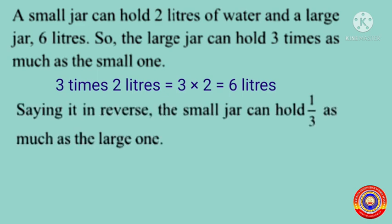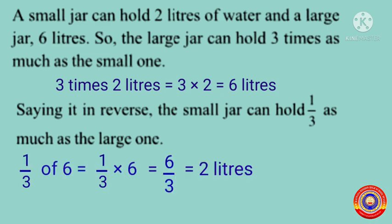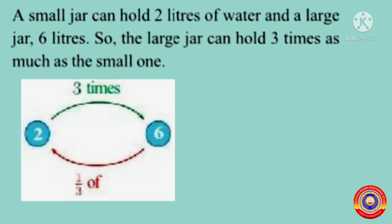Saying it in reverse, the small jar can hold one-third as much as the large one. That is, one-third of six is equal to one-third multiplied by six, that is equal to six by three, that is equal to two liters. It can be represented through this diagram: three times two is equal to six, and one-third of six is equal to two. Three may be written as the fraction three by one.